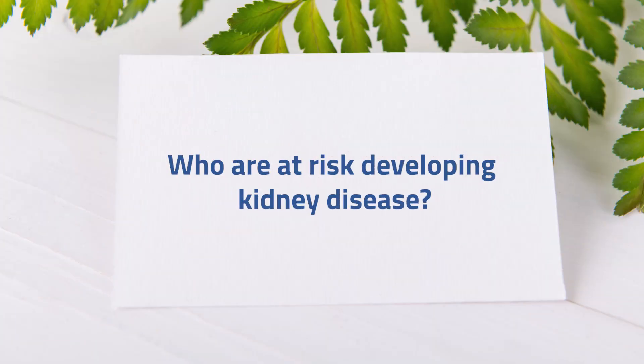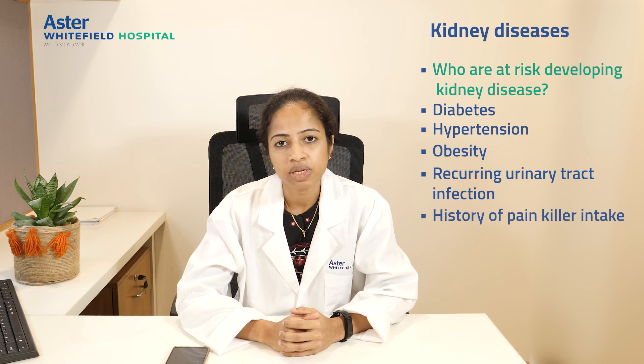Coming to question number two: who are at risk of developing kidney disease? As we discussed about the causes, diabetics should get screened. Hypertensives should get screened for kidney disease. Obesity is a risk factor, so if you are overweight or obese, you should get screened. If you have recurrent urinary tract infections or a history of painkiller intake, you should get screened. If you are above the age of 50, or if you are female with a history of hypertension during pregnancy, you should get a screening urine and blood pressure checkup.